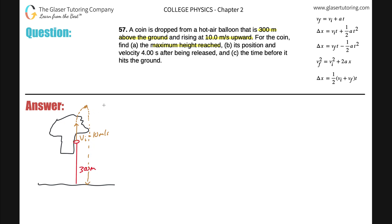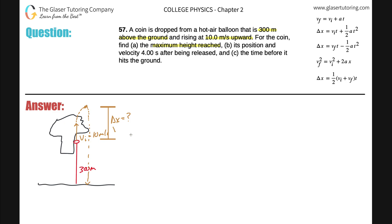I already know this part - 300 meters. What I really want to find is just this additional piece above that. If I can find this displacement, I can add whatever value I find to the 300 and find the total. So I know the initial velocity was 10 meters per second, and I'm looking for the displacement.